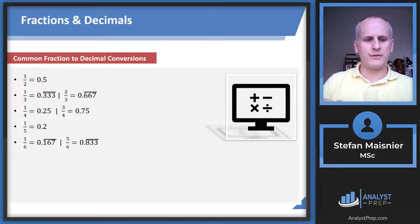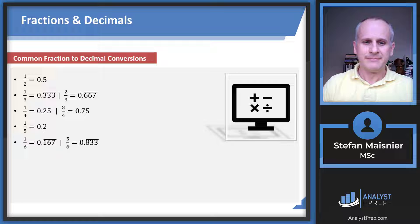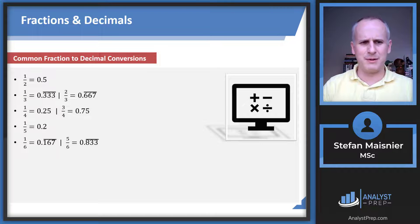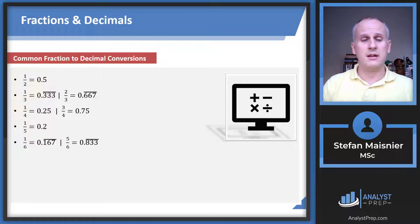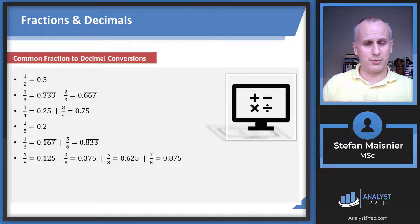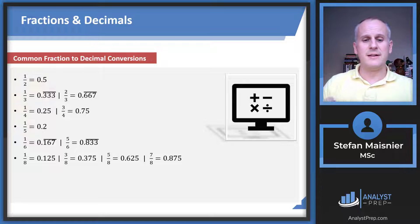One sixth is 0.167, exactly half of 0.33 repeating. Five sixths is two thirds plus one sixth, which gets you 0.833 repeating. The eighths are one eighth 0.125, three eighths 0.375, five eighths 0.625, and seven eighths 0.875. You're just adding 0.125 to one quarter, one half, or three quarters respectively.